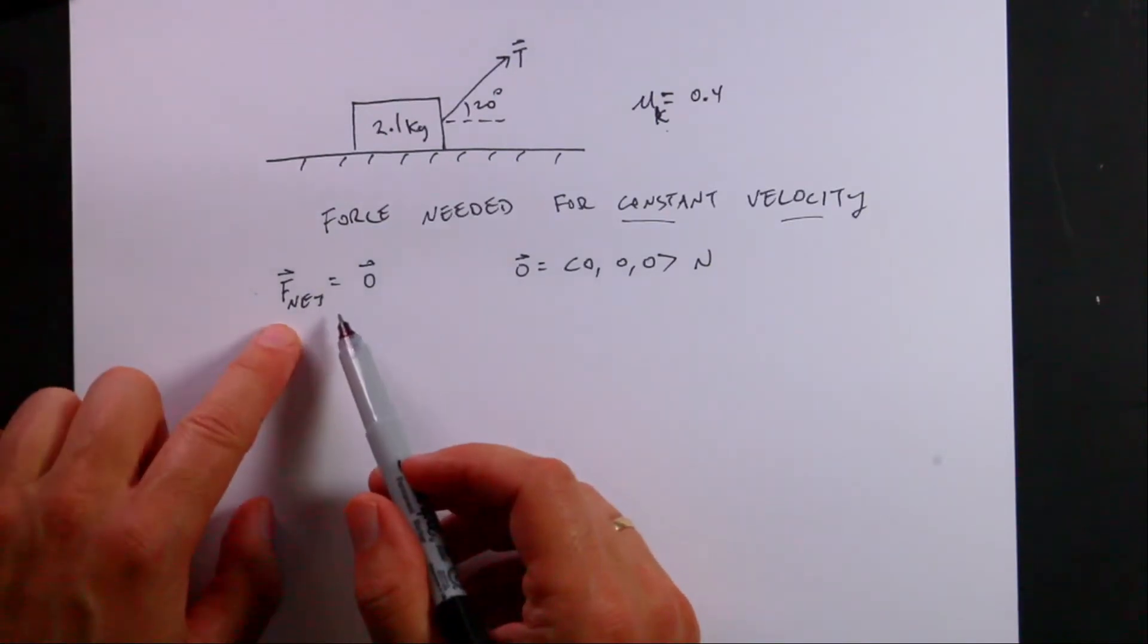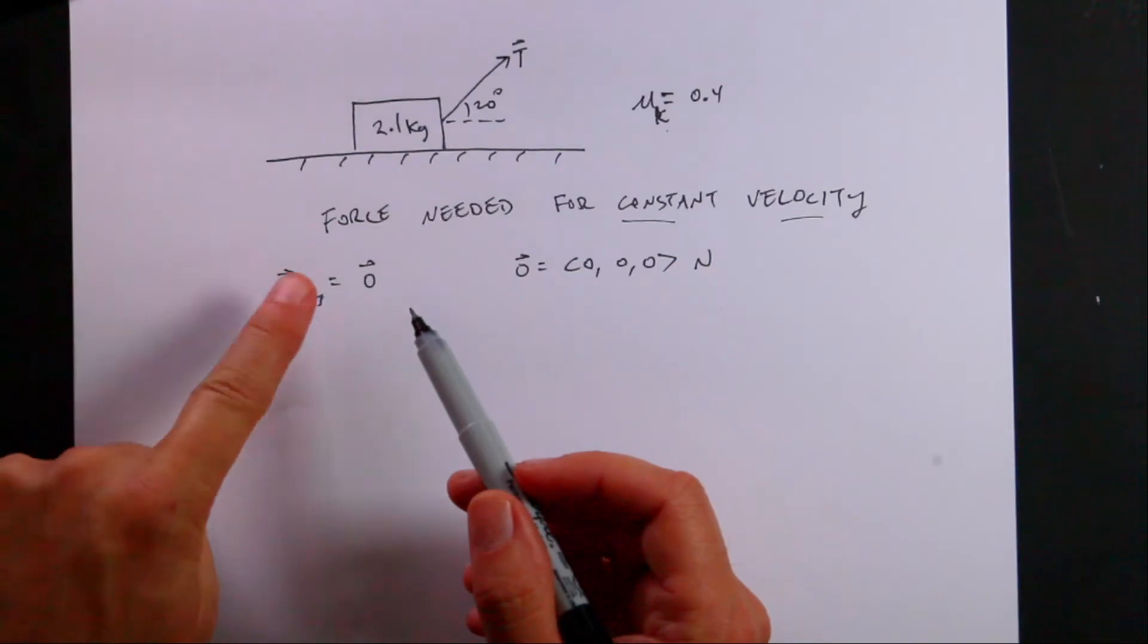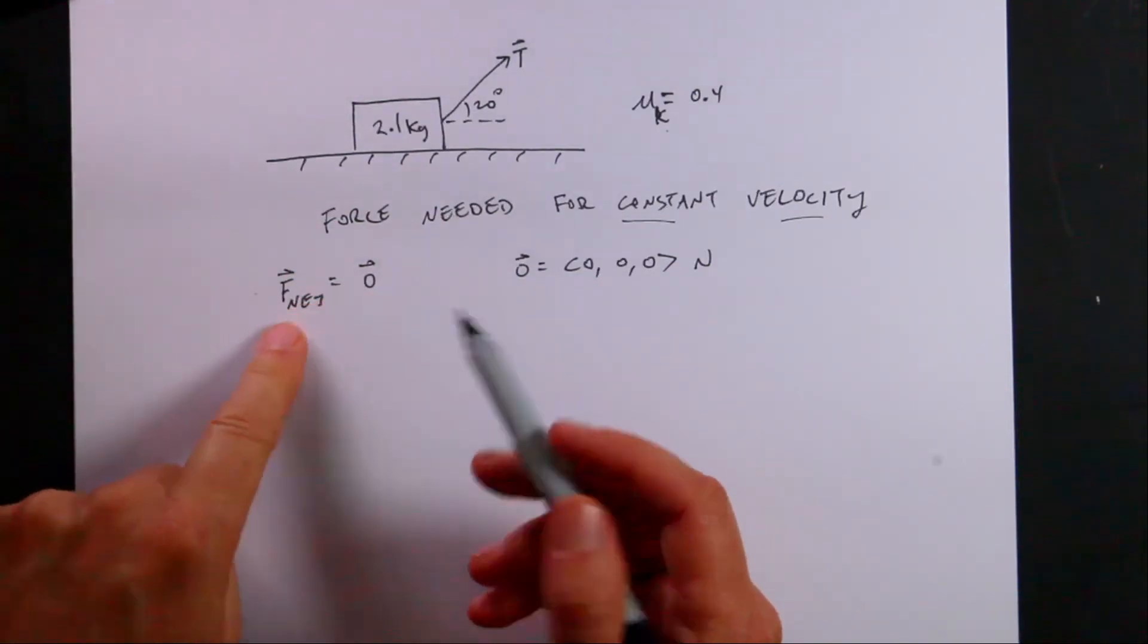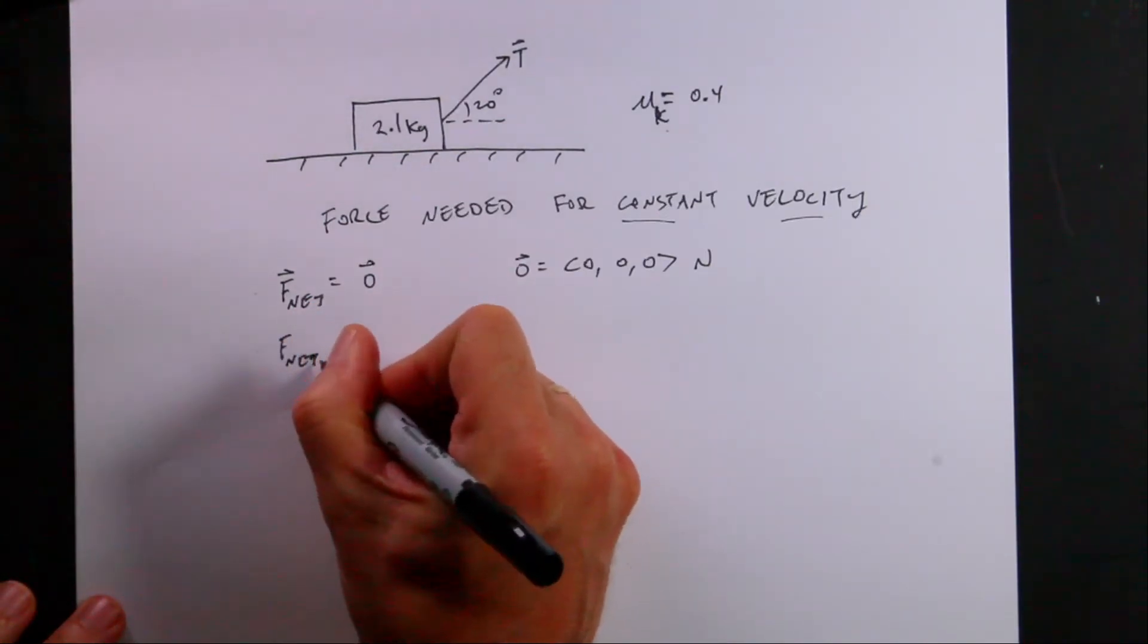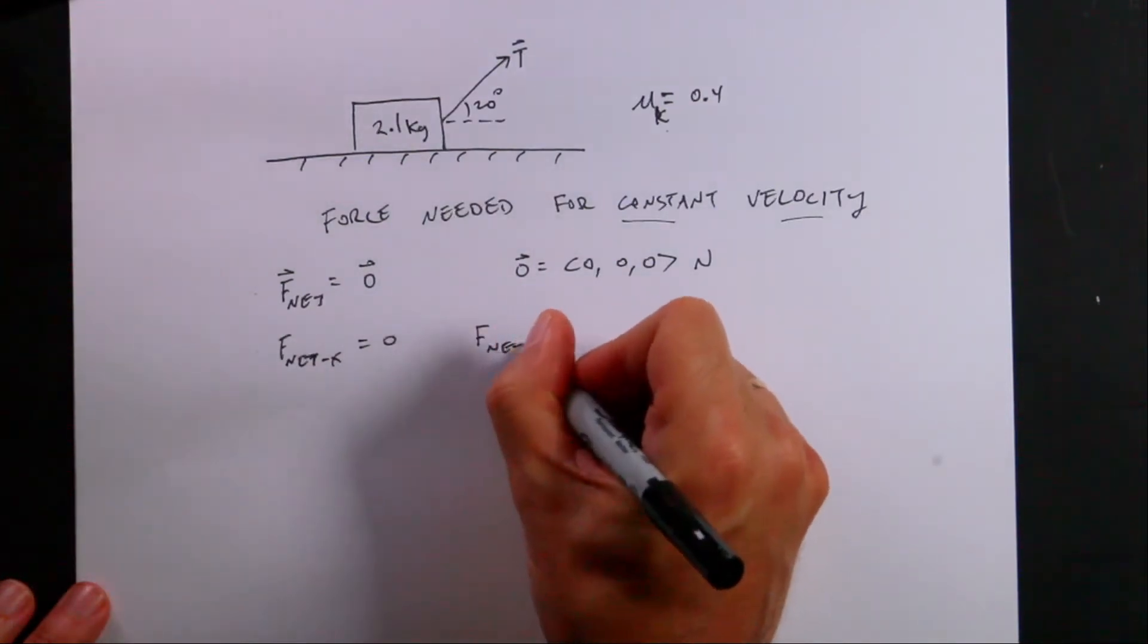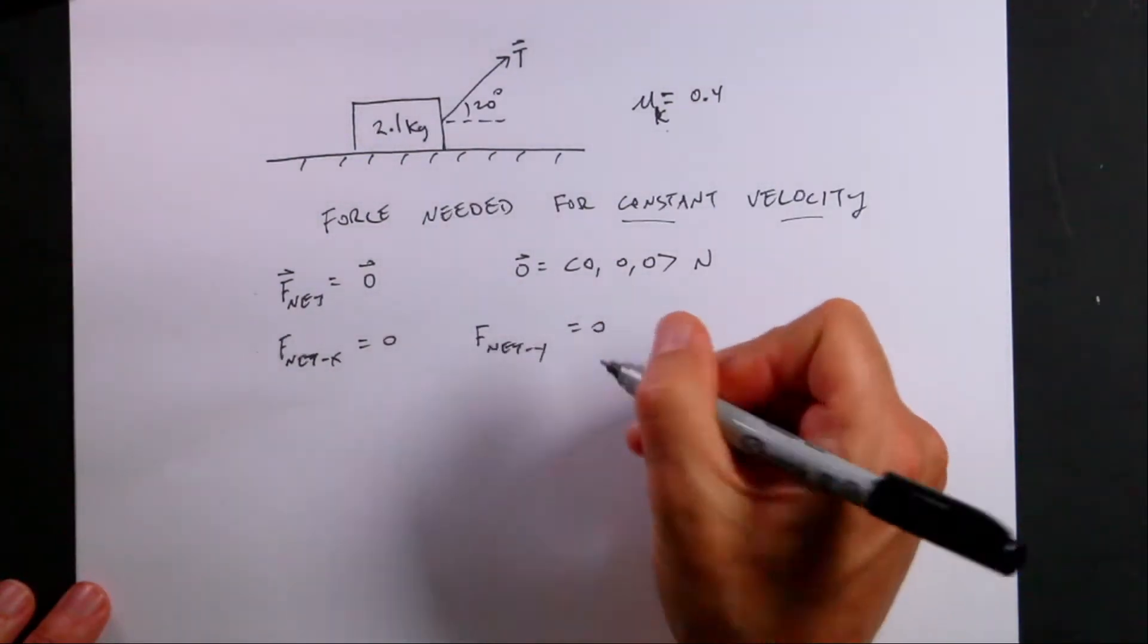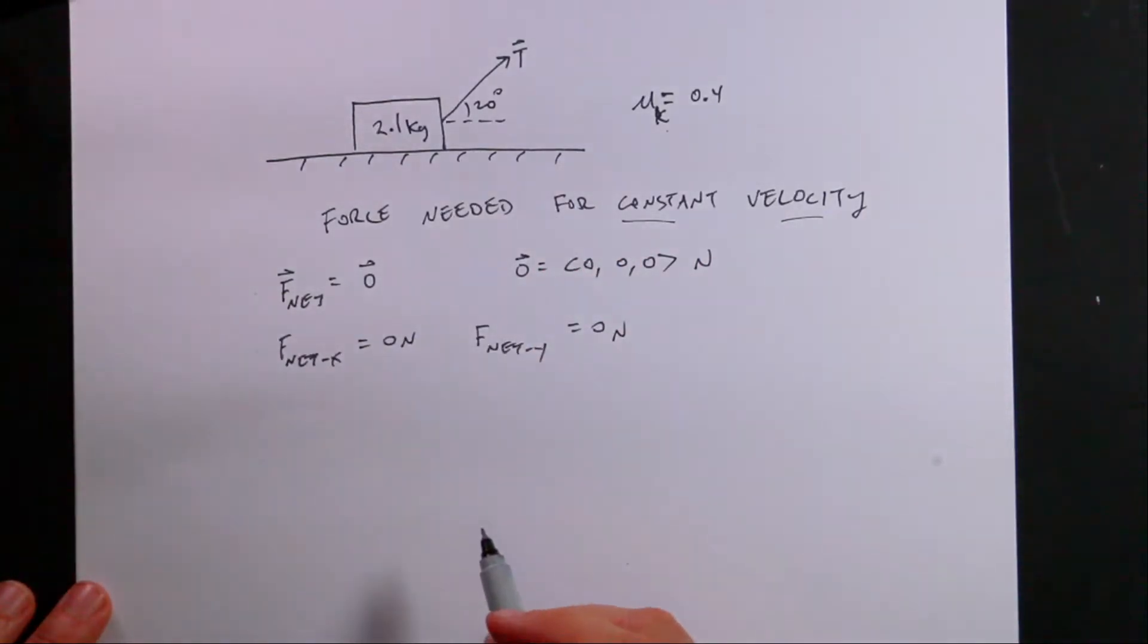If this is true though, I actually can write two other equations. If the net force vector is zero vector, then this means the net force in the x direction is zero as a scalar equation, and the net force in the y direction as a scalar is equal to zero. These are Newtons. So I get two equations. I get a net force in the x direction and a net force in the y direction.